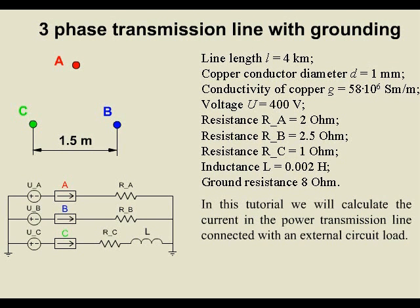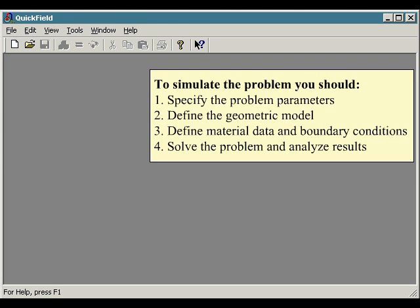In this tutorial, we will calculate the current in the power transmission line connected with an external circuit load. To simulate the problem, you should specify the problem parameters, define the geometric model, define material data and boundary conditions, solve the problem, and analyze results.